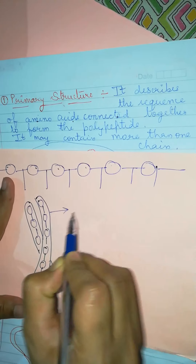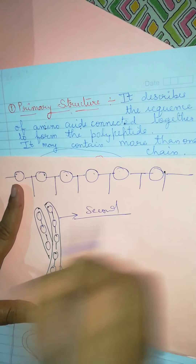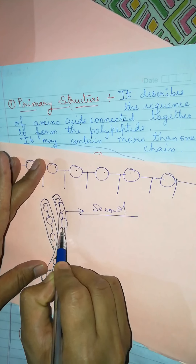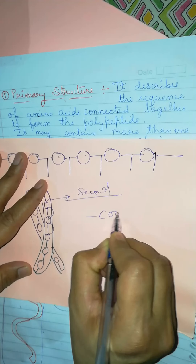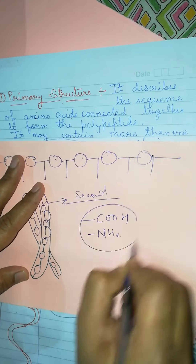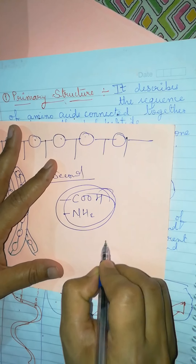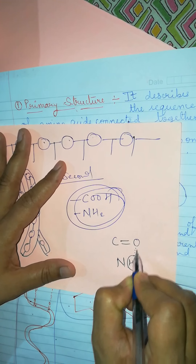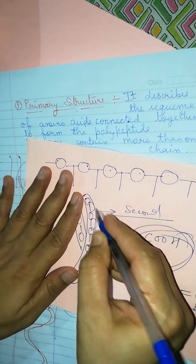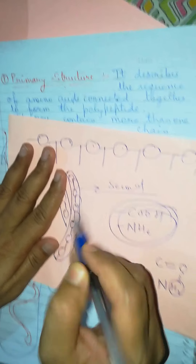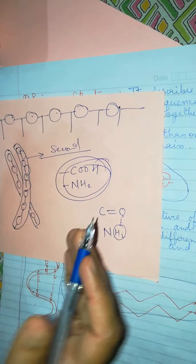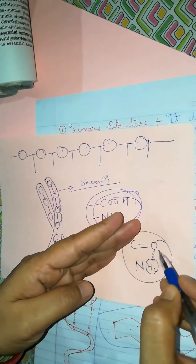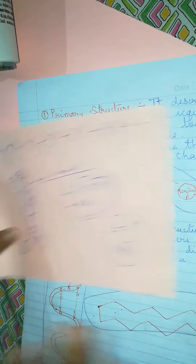From this primary structure, secondary structure is formed. When the strand has amino acids — and amino acids have COOH and NH2 groups — between these two groups, the C=O (carbonyl) and the H of NH2 start hydrogen bonding with each other. This happens when the density of amino acids in a strand increases, i.e., as the number of amino acids increases, the space becomes less, so they start showing bonding — meaning oxygen-hydrogen bonds start forming, which causes the strand to shear.